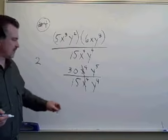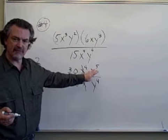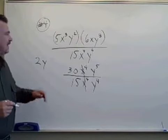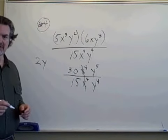And y to the fifth divided by y to the fourth. These four y's down here cancel out four of the five, leaving me just one y. Answer, two y. We've performed the multiplication and division by applying our properties of exponents.